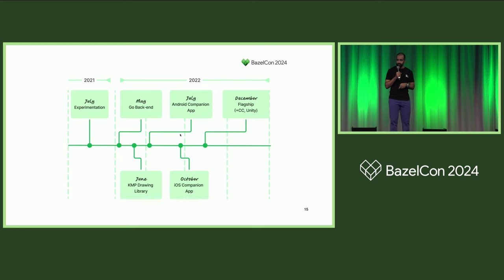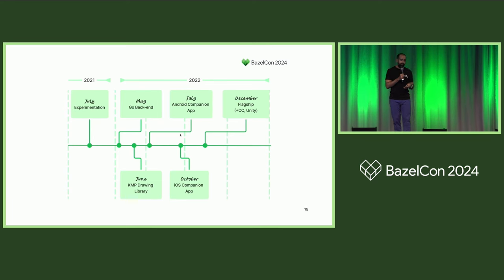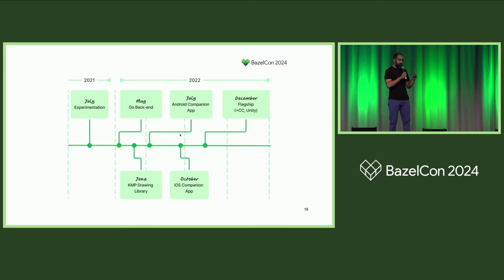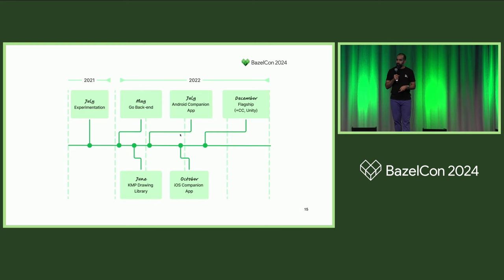We started experimenting with Bazel in mid-2021 — mostly a nights and weekends project by me. Go, having the most built-out automation with Gazelle, seemed the most approachable. And it was. The actual conversion of Go happened pretty quickly. The long time before going live in production was mostly testing and laying the groundwork for other languages. We went live with Go in May of 2022.